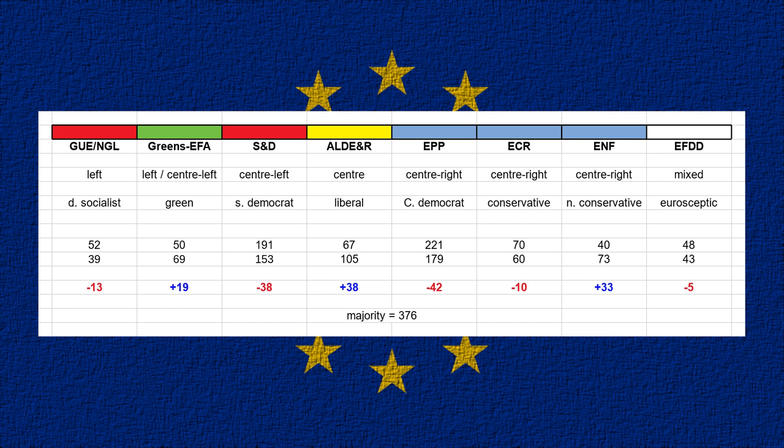So you can see: GUE-NGL lost a few seats; the Greens had a good night, gaining 19 seats; S&D had a very bad night; ALDI had a good night; EPP had a bad night; ECR was bad but not as bad as for the EPP; and it was a very good night for the ENF.